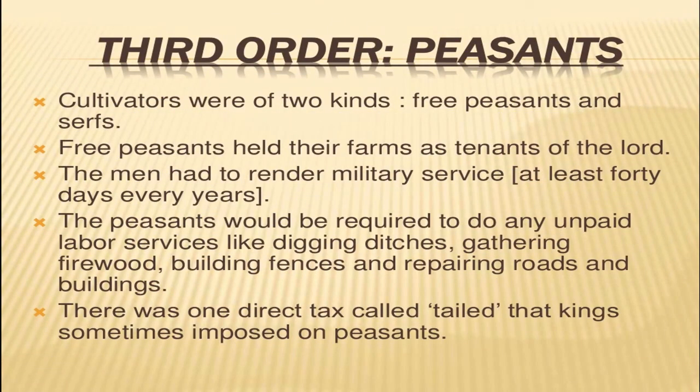Talking about the third order, i.e. peasants: cultivators were of two kinds — free peasants and serfs. Free peasants held their farm as a tenant of the lord, and the men had to render military service at least 40 days every year. The peasants were also required to do unpaid labor services like digging ditches, gathering firewood, building fences, and repairing roads and buildings. There was one direct tax called the taille that kings sometimes imposed on peasants.